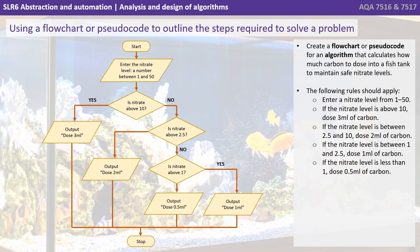Here we see the flowchart that we have created to follow this logic. We can see we've got the start at the top, followed by entering the nitrate level — a number between 1 to 50. And then we have a number of decision points, which of course we would represent by if-statement selection.